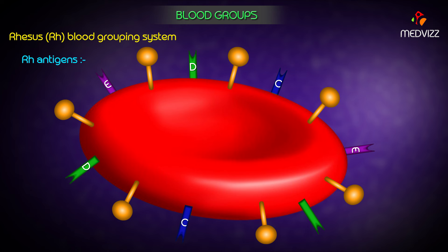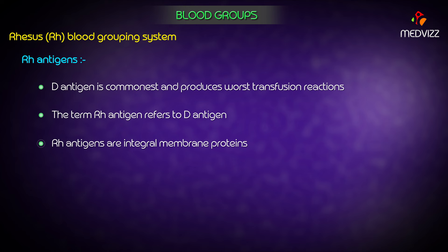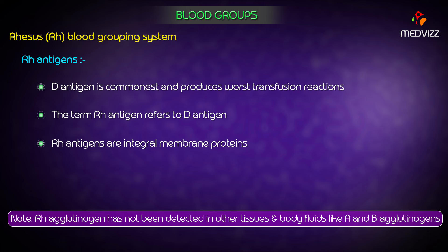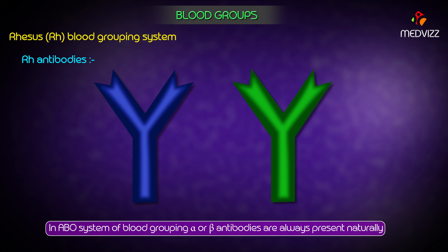The remaining 15 percent were labeled Rh negative. Three types of Rh antigens — C, D, and E — have been recognized; however, D antigen is the commonest and produces the worst transfusion reactions, so for all practical purposes the term Rh antigen refers to D antigen. Rh antigens are integral membrane proteins, and notably, Rh agglutinogen has not been detected in other tissues and body fluids, unlike A and B agglutinogens.